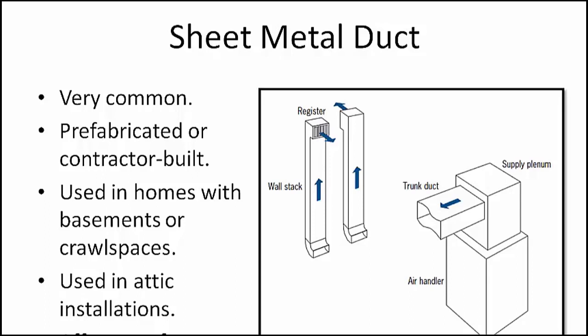The image on the right is an air handler which includes the fan together with the supply plenum and a portion of the trunk line. At the left are two wall stacks and registers. What's missing from the drawing is the duct system in between connecting the air conditioning equipment and the wall stacks.